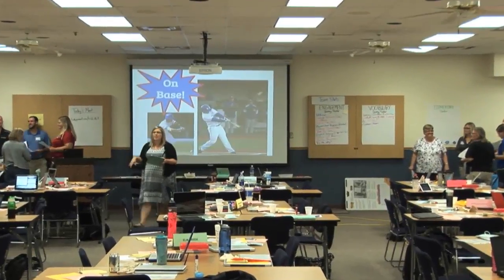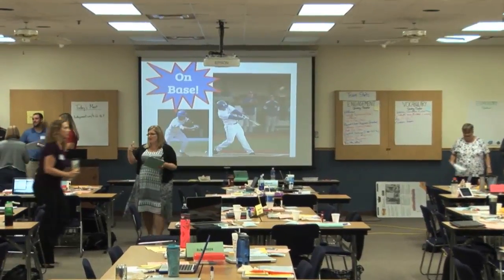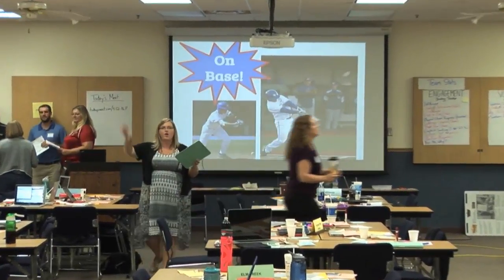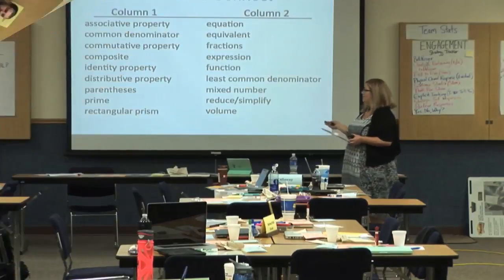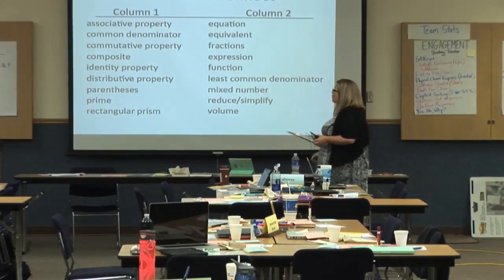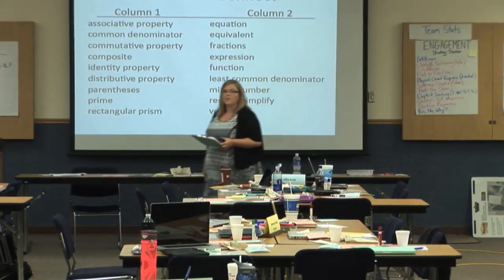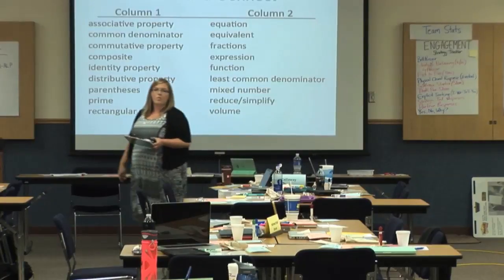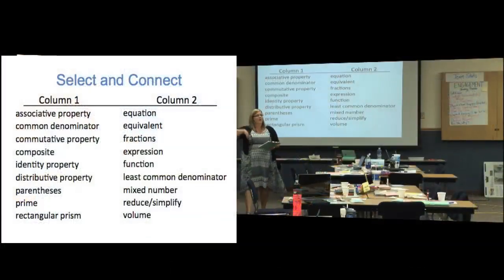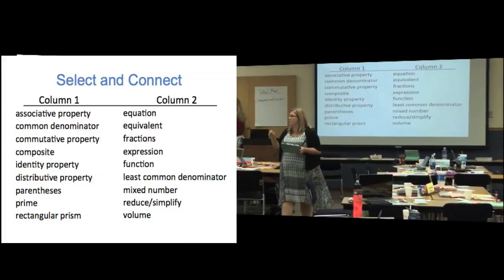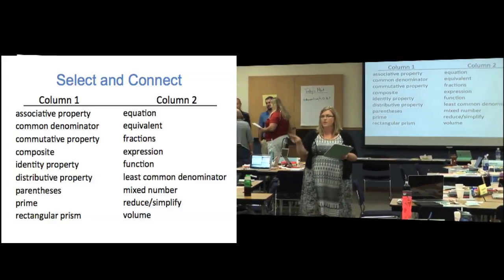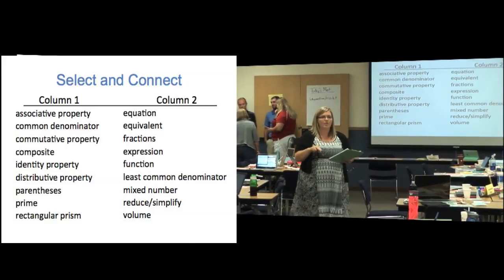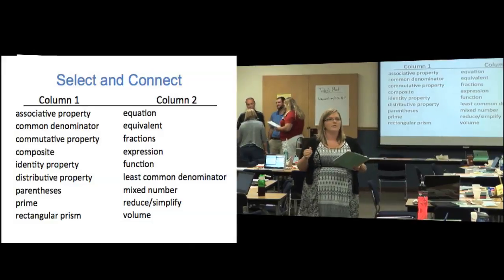What you're going to do right now is number yourselves one to six — or however many are in your group — and hold up what number you are. Person number three, you get to pick the two words — one from column one and one from column two. Then as a group you'll have two minutes to come up with an explanation, and one of you is going to tell the rest of the class about it.